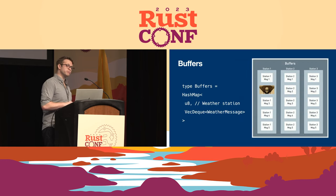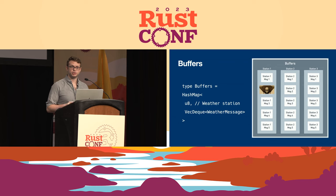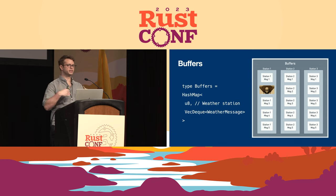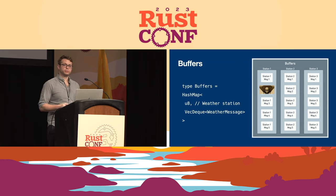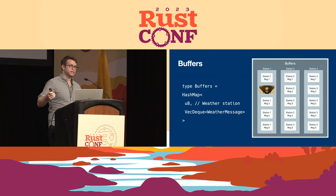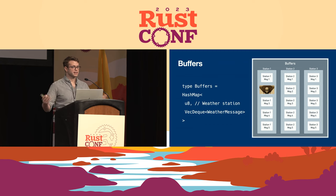We're going to model the buffers essentially as a hash map, ordering messages along two axes: the station the messages came from, and the message creation time. Station one on the left, station N on the right, earlier messages towards the top, later messages towards the bottom. The key on our hash map is the station number, and the value is the buffer for that station. We're using a VecDeque rather than a vector, because messages may arrive late and need to be inserted at the beginning of the line — doing that in a vector causes everything to shift, which is not efficient.